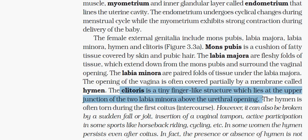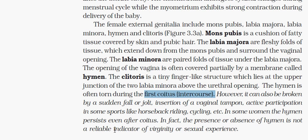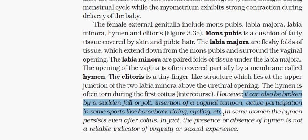Hymen is broken during the first coitus, that is intercourse. But the absence of hymen in a female does not indicate virginity or sexual experience, because it can also be broken due to cycling, horseback riding, active participation in sports, insertion of a vaginal tampon, or a sudden fall or jolt.